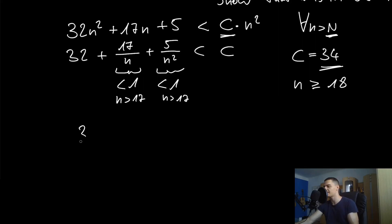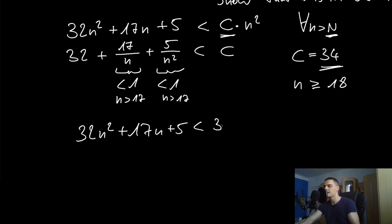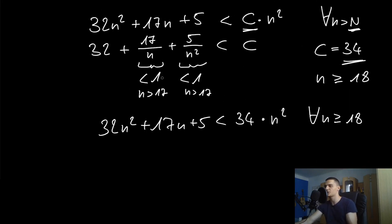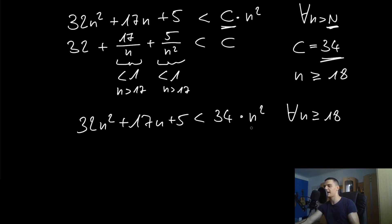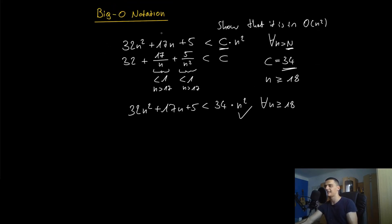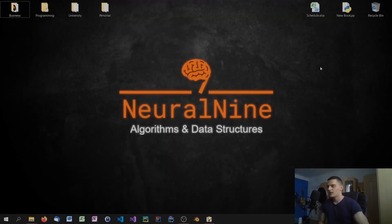So we can say: if n ≥ 18 and c = 34, that is the proof that 32n² + 17n + 5 is in Big O of n². We can say 32n² + 17n + 5 is always less than 34 × n² for all n ≥ 18. This is obviously the case — we showed it by looking at those fractions. The moment n passes 18, we definitely have a larger value on the right side. This is how you can prove mathematically that an expression is in Big O of n².